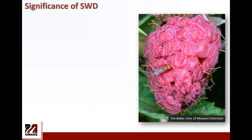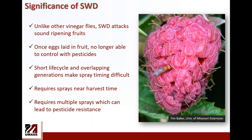I'm pretty confident that every person watching this webinar knows the significance of this pest. In short, females lay eggs inside ripening fruit. Once the eggs are laid, they are protected — it's difficult, though not impossible, to kill the larvae. The adult flies are susceptible to many insecticides. What makes management difficult is a set of specific characteristics.